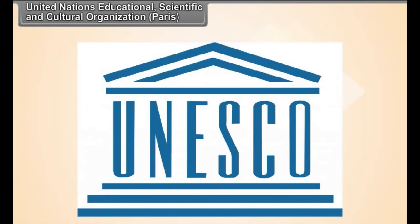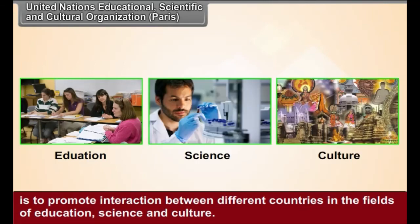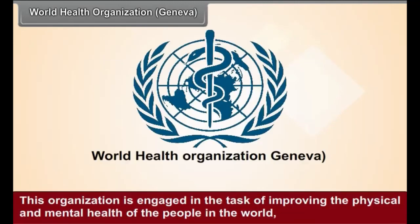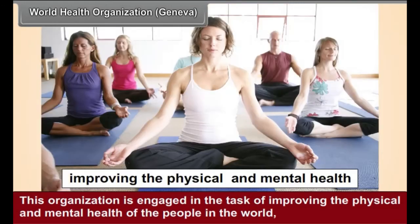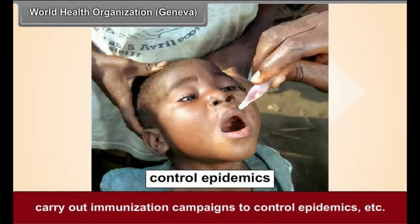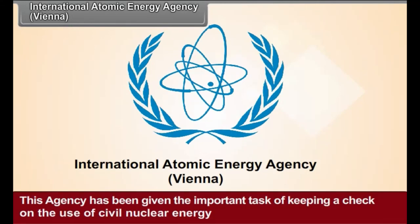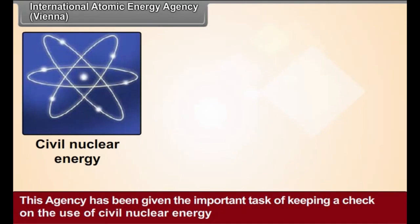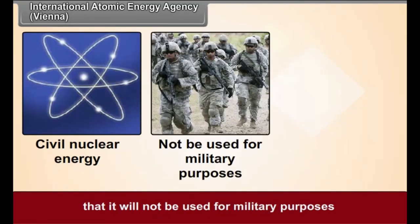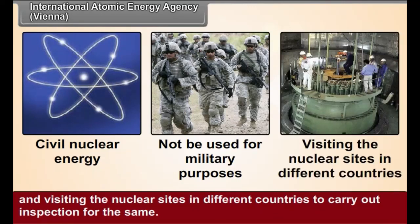The United Nations Educational, Scientific and Cultural Organization (UNESCO) promotes interaction between different countries in the fields of education, science, and culture, and also tries to reduce illiteracy in the world. The World Health Organization, based in Geneva, works to improve the physical and mental health of people worldwide and carries out immunization campaigns to control epidemics. The International Atomic Energy Agency, based in Vienna, has been given the important task of keeping a check on the use of civil nuclear energy to ensure it will not be used for military purposes, and visiting nuclear sites in different countries to carry out inspections.